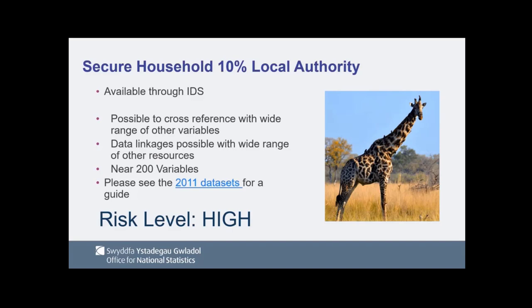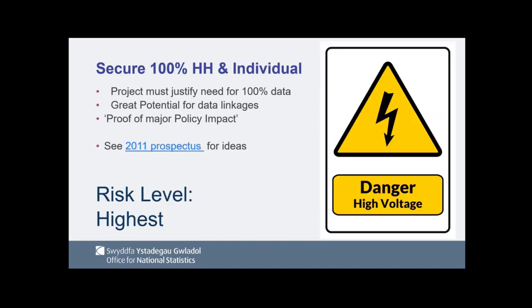For the secure household 10%, again available through the Integrated Data Service, we're hoping the first applications could be next year to access this data. Nearly 200 plus variables. There will be documentation once the dataset is released, and again there's a 2011 link for a guide. It is possible to cross-reference with a really wide range of other variables. Then the secure 100%: justifying the need for this data must justify proof of major policy impact. It will be both household and individual — it's not a sample, it's nearly everything. This is the highest risk data we would allow out, but the protections come not from anything done to the data, but from the situation in which it is held.